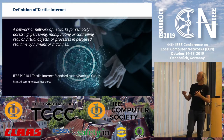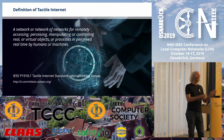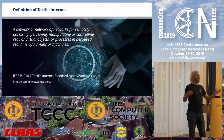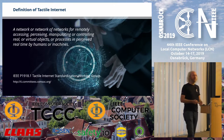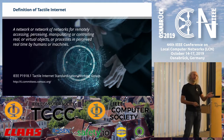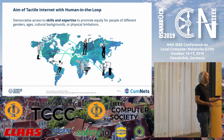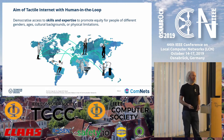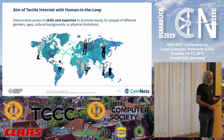The definition is: a network or network of networks for remotely accessing, perceiving, manipulating, or controlling real or virtual objects or processes in perceived real time by humans or machines. The phrase 'by humans' was not there in the beginning — we added it, hence our title 'human in the loop.' When we started with 5G, we were interested in machine-type communication and machine-to-machine. But what if the human is in the loop? The tactile internet is about democratizing information access worldwide, with no limitation.